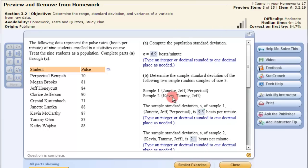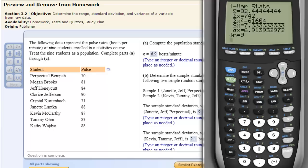Now on the second one, it says compute the sample standard deviation of sample 1. Let's just do that one: Jeanette, Jeff, and Perpetual. So Perpetual, we'll put that information in there.